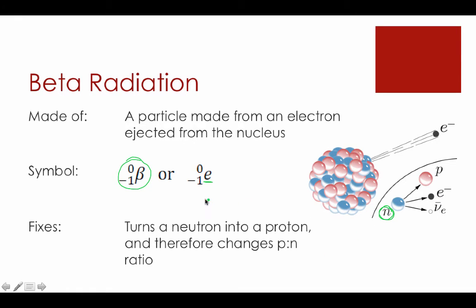That pretty much talks about how it fixes things as well. A beta particle turns a neutron into a proton, and as a result of that, it changes the proton-to-neutron ratio. So any scenario where we have too many neutrons, a beta particle could potentially fix that.